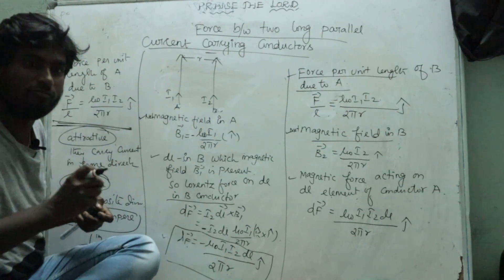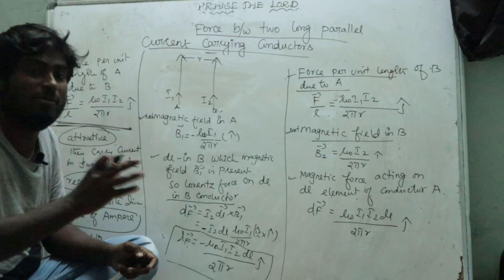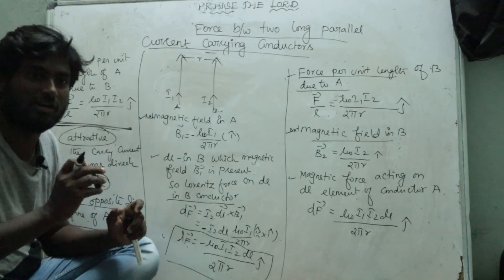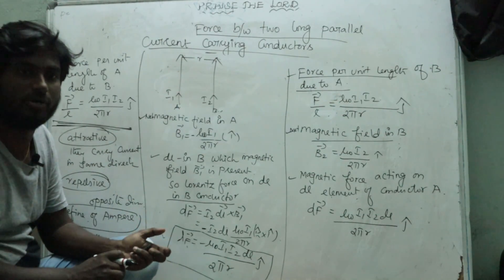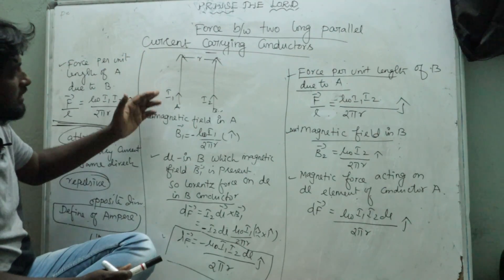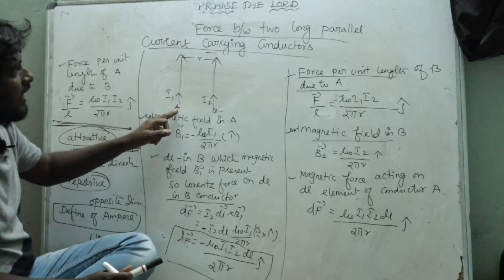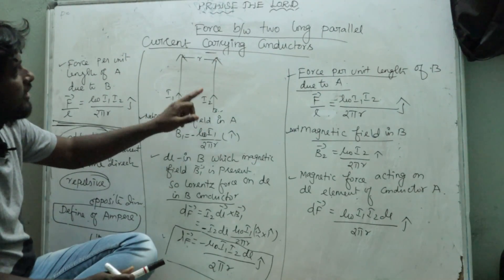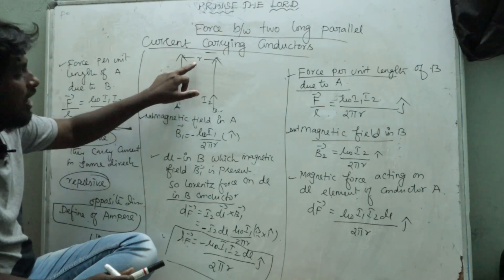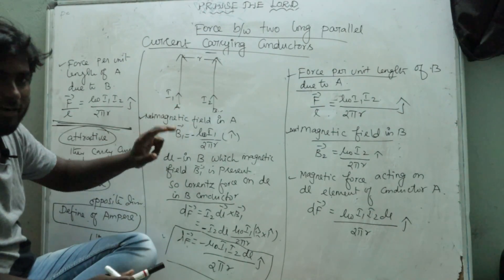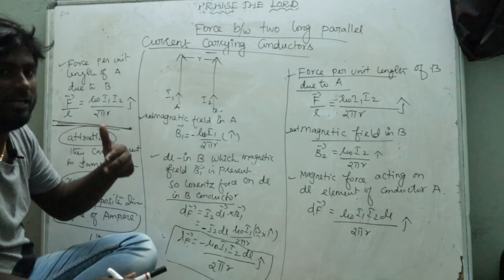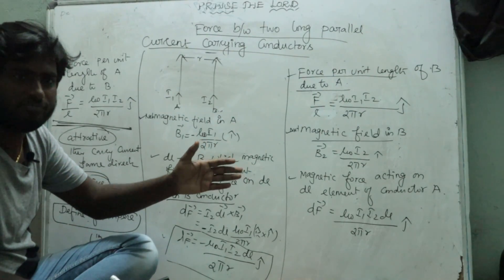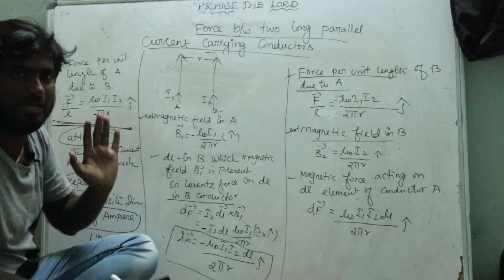Both currents are flowing in the same direction. So: A and B are the two long current-carrying conductors, separated by distance R. I1 and I2 are the currents flowing through conductors A and B respectively, in the same direction.